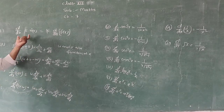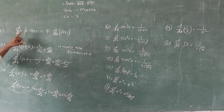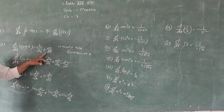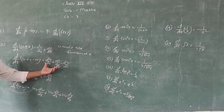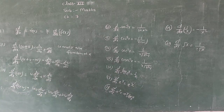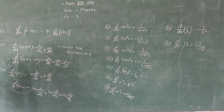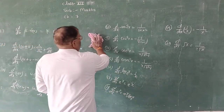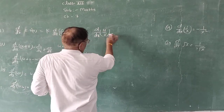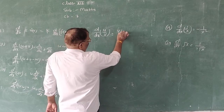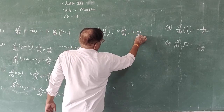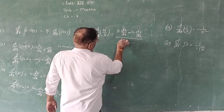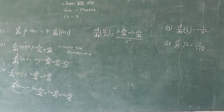Theorem 4 (Quotient Rule): Differentiation of u upon v = [v · du/dx − u · dv/dx] upon v². This is the differentiation of division of two functions. These are the 5 theorems. Theorem 5 is the Chain Rule — श्रृंखला नियम — which has a very simple identification.